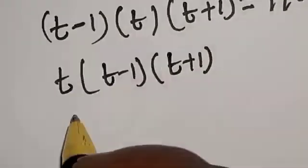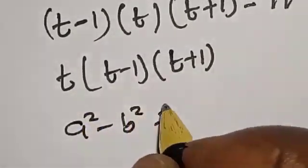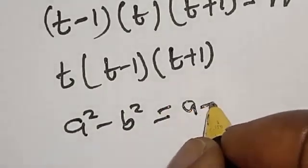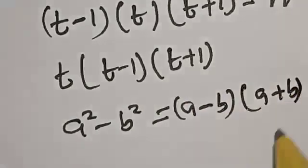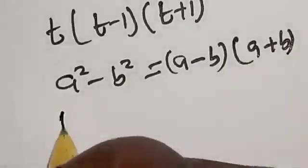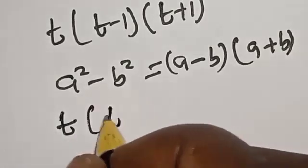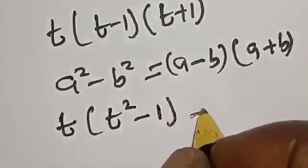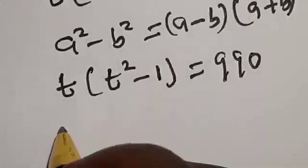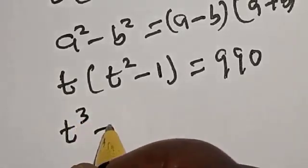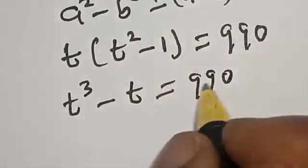Let's rearrange: t × (t-1)(t+1). This is a difference of two squares: a² - b² = (a-b)(a+b). So we have t × (t²-1) = 990. Expanding the bracket: t³ - t = 990.